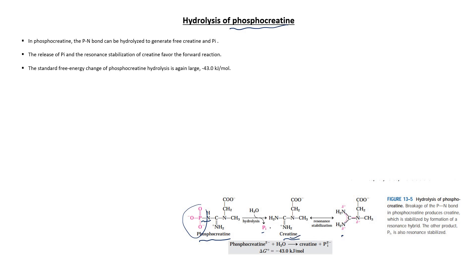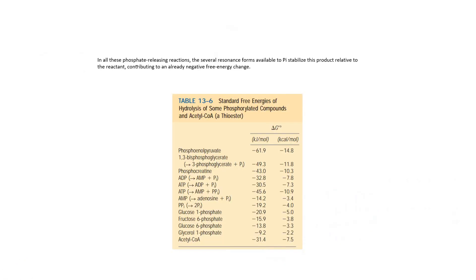Creatine undergoes resonance stabilization. Inorganic phosphate is also stabilized through resonance, and creatine is also stabilized through resonance. Because of this, the standard free energy of hydrolysis of phosphocreatine is large and negative: minus 43 kilojoules per mole. In all these phosphate-releasing reactions, several resonance forms available to inorganic phosphate stabilize the product relative to the reactant, contributing to an already negative free energy change.